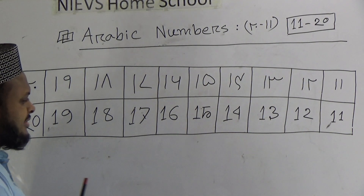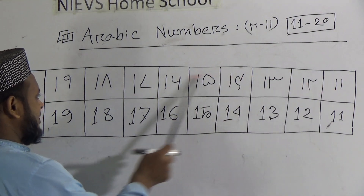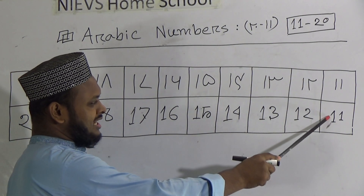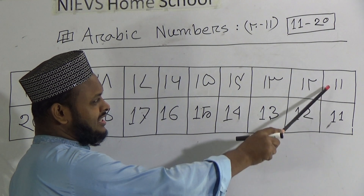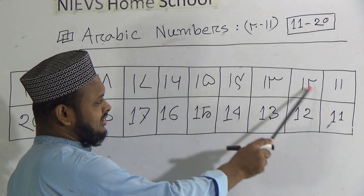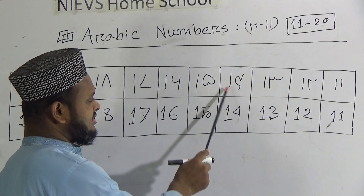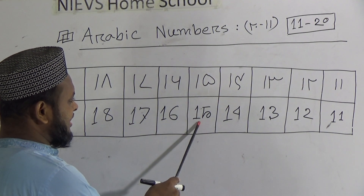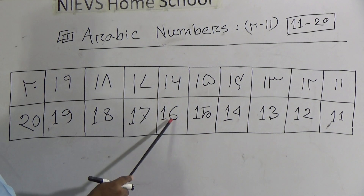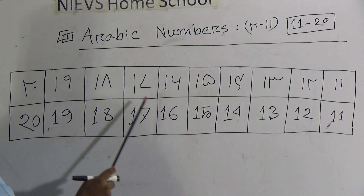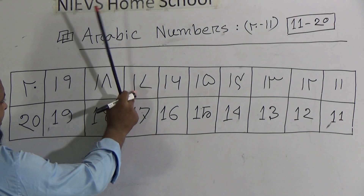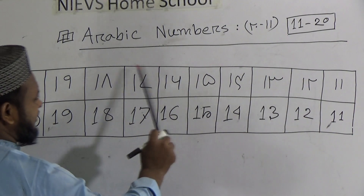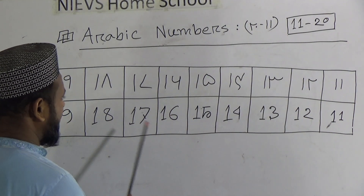Dear students, in the examination you have to write only these Arabic numbers. No need to write in English — I wrote the English here only for easy understanding. For example, this is equal to 11, 12, 13, 14, 15, 16, 17 in Arabic. In the examination hall you must write only the Arabic numbers.